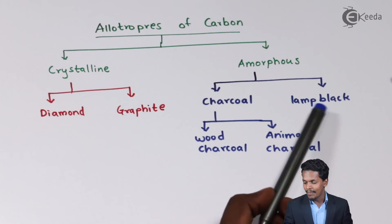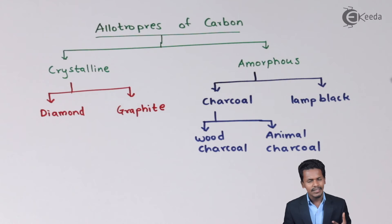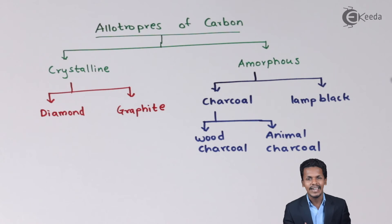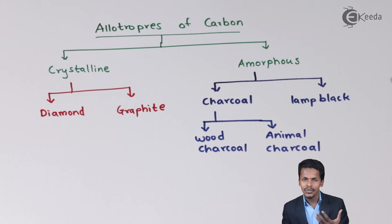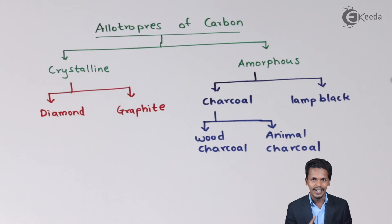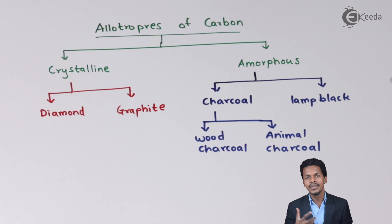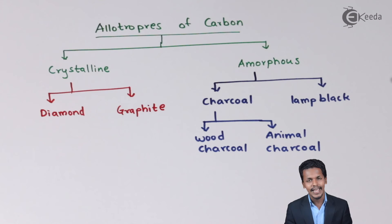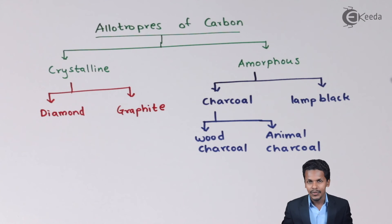Lamp black is produced when fuels such as petroleum or organic compounds like methane burn with a sooty flame. That sooty material is collected — it is black in colour — and has various uses such as boot polish and other applications.